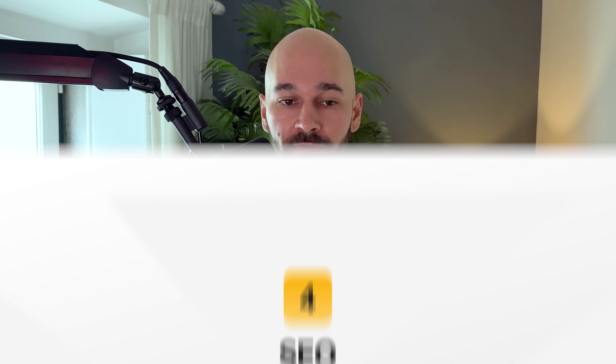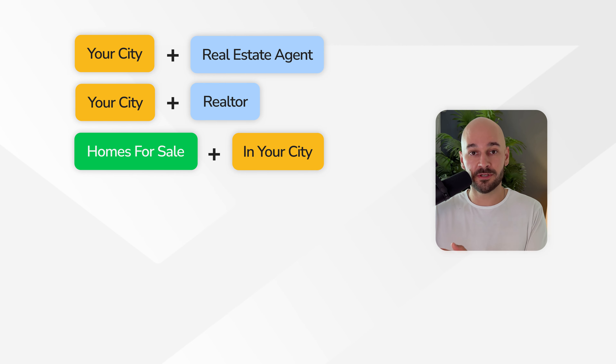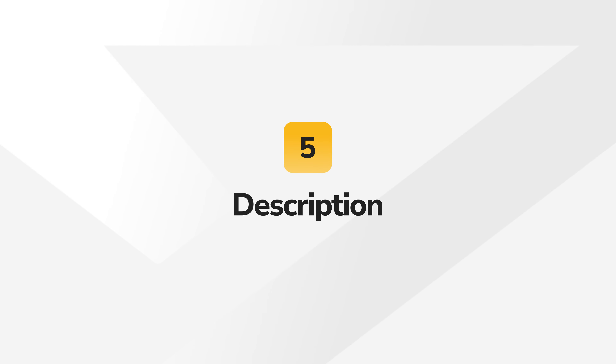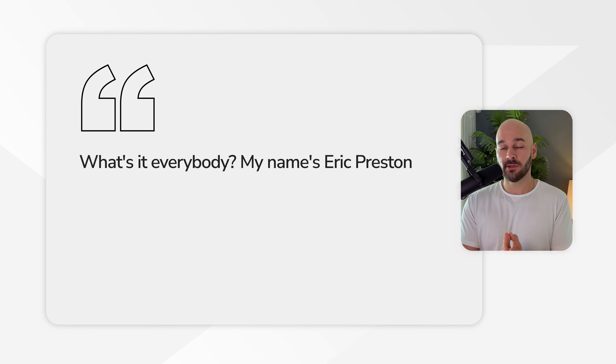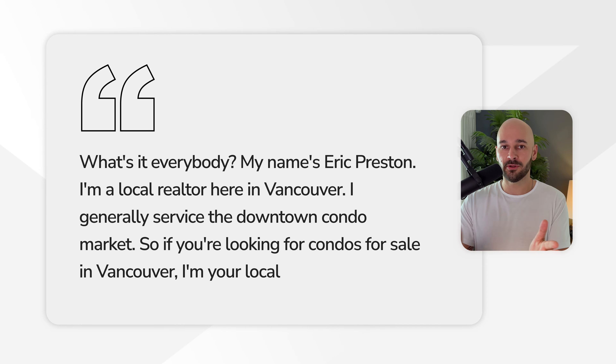Another important factor is SEO — search engine optimization. It's important you get the right keywords in your profile. For your description, your main keywords are: your city plus 'real estate agent,' your city plus 'realtor,' 'homes for sale in your city,' condos or apartments for sale in your city, and 'properties for sale in your city.' Loop those throughout your description — describe what you do, like 'My name is Eric Preston, I'm a local realtor in Vancouver, I service the downtown condo market, so if you're looking for condos for sale in Vancouver, I'm your local real estate agent.' But don't get obsessive about it — you won't just stuff keywords and rank number one. It's a combination of all these things, just increasing your odds of showing up in search.